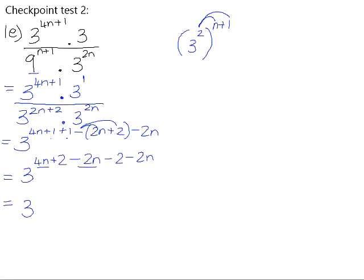4n minus 2n is 2n, minus 2n is 0. Positive 2 subtract 2 is 0, and anything to the power of 0 is positive 1.